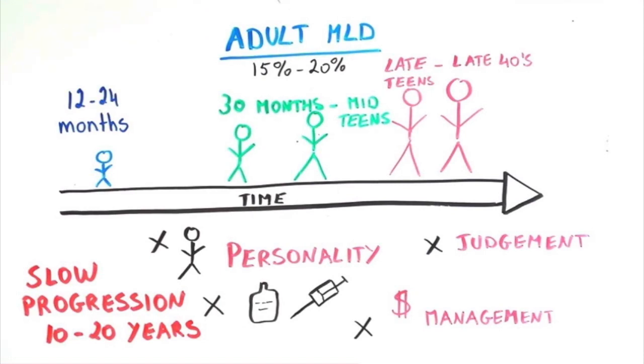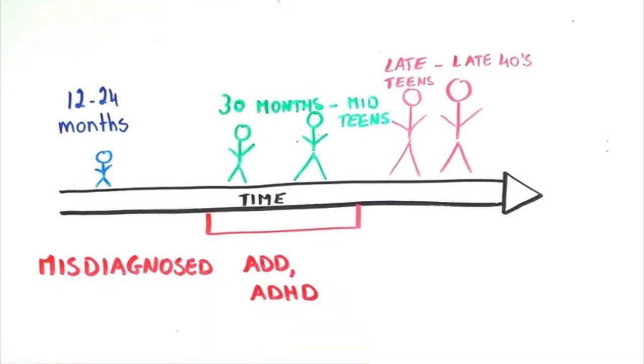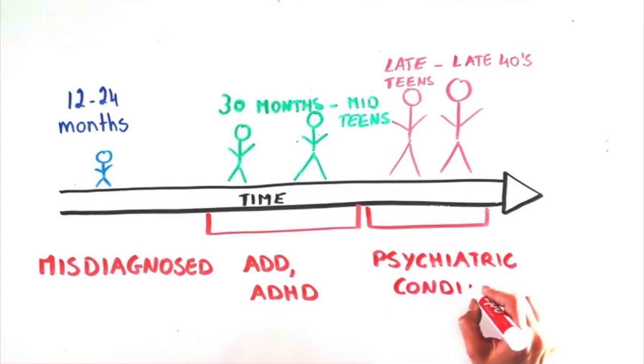Because of these very broad symptoms, juvenile and adult MLD are often misdiagnosed and treated as ADHD, ADD, or psychiatric conditions.